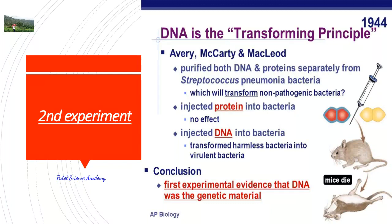In the Griffith experiment, the conclusion was that there was a transforming material or transforming principle, because of which the R strain converts into the S strain, which is responsible for pneumonia and which causes the death of the mice. But there was a big question regarding that transforming principle. It is now clear it is DNA, but at that time there was a big confusion regarding that transforming principle.